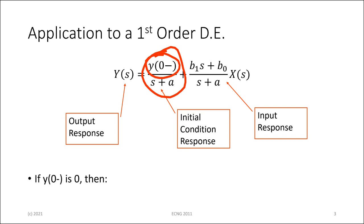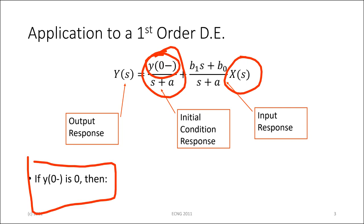So when you look at the response of the system now, for our first order response, part of the response has to do with what the initial condition is, and then the other part is tied to the input. If the initial condition is zero — for instance, if it's a totally causal system starting from scratch, like a regulated power supply that's been off a while with all capacitors discharged — when you turn it on it wouldn't have an initial condition response. All it will do is respond to the input that you give it.